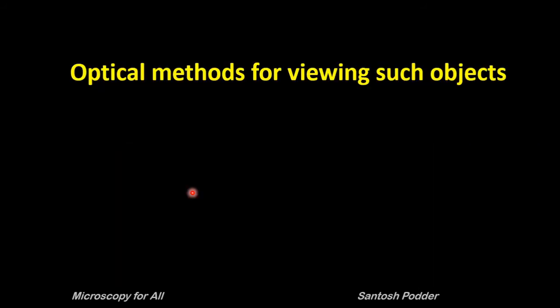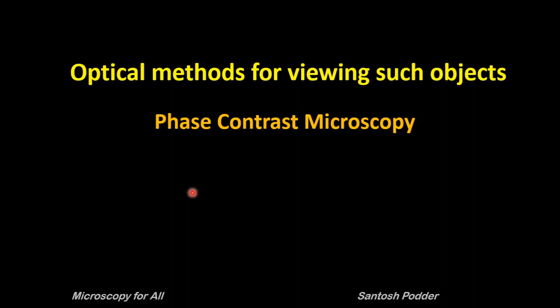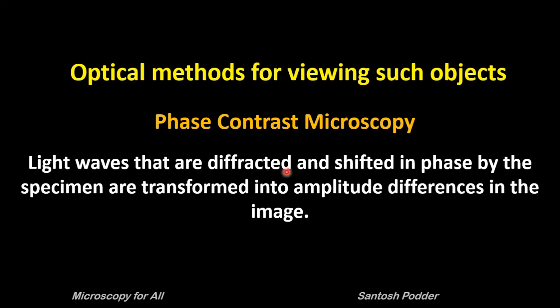One of the optical methods for viewing such objects is phase contrast microscopy. Here, light waves that are diffracted and shifted in phase by the specimens are transformed into amplitude or brightness differences in the image. As a result, the transparent and unstained specimens easily become visible to our eyes.